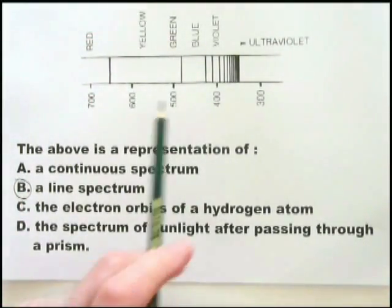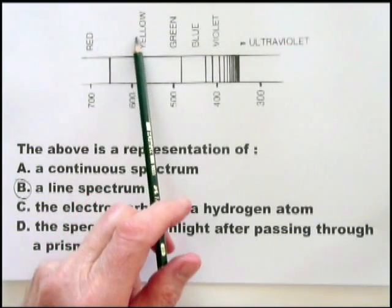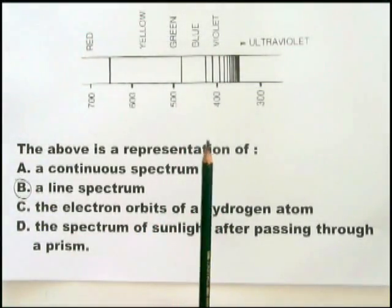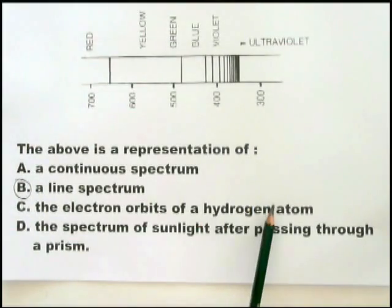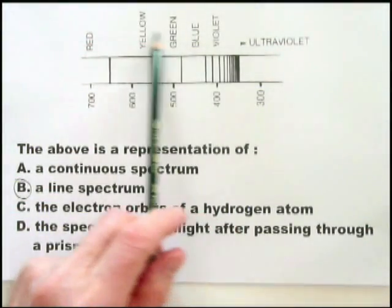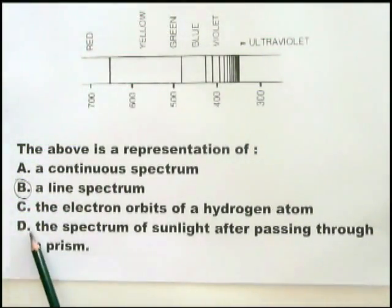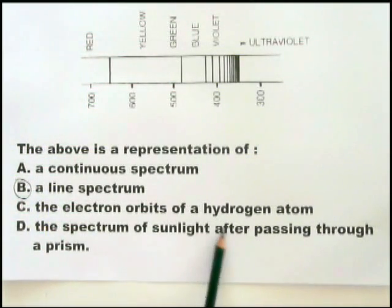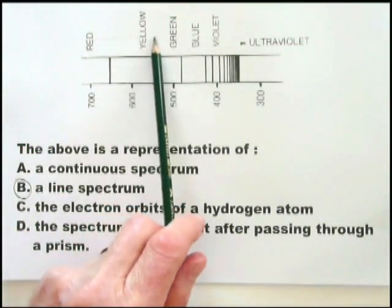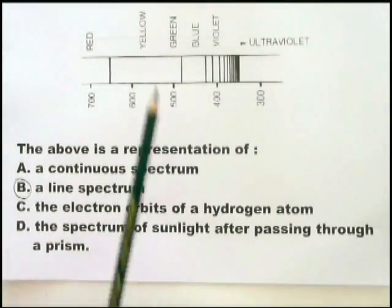It's certainly not a continuous spectrum — a continuous spectrum would show the individual colors themselves merging: red merging with yellow, yellow merging with green, green merging with blue, etc. It's clearly not the electron orbits of a hydrogen atom, because although they would look like these lines, they wouldn't have these colors or wavelengths associated with them. And it's not the spectrum of sunlight passing through a prism, because that spectrum is continuous.